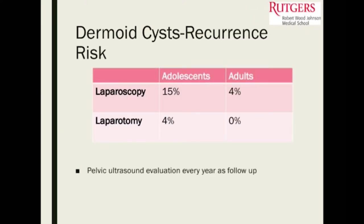After an ovarian cystectomy in an adolescent patient done laparoscopically, the recurrence rate is 15%. In an adult who had a dermoid cyst removed laparoscopically, the recurrence is 4%. And if an adolescent had a laparotomy for dermoid cyst removal, the recurrence is about 4% as well, which is much lower.